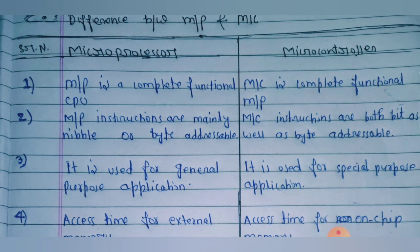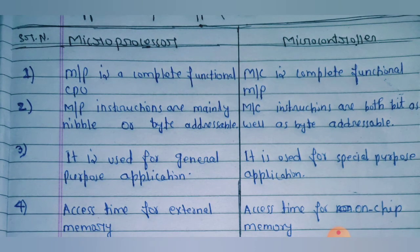Point number four: a microprocessor accesses external memory, whereas a microcontroller accesses on-chip memory, resulting in faster access time.